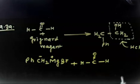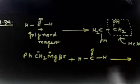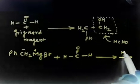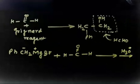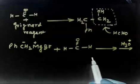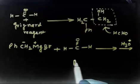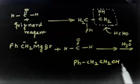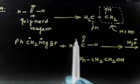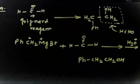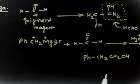This carbanion will attack the formaldehyde carbon, the oxygen will pick up charge, and I do hydrolysis with H₃O⁺ to get the desired product — Ph-CH₂-CH₂-OH. This minus will attack here, then take H⁺ from water. Simply writing water is enough; H₃O⁺ is not required. Now let us discuss Part B.